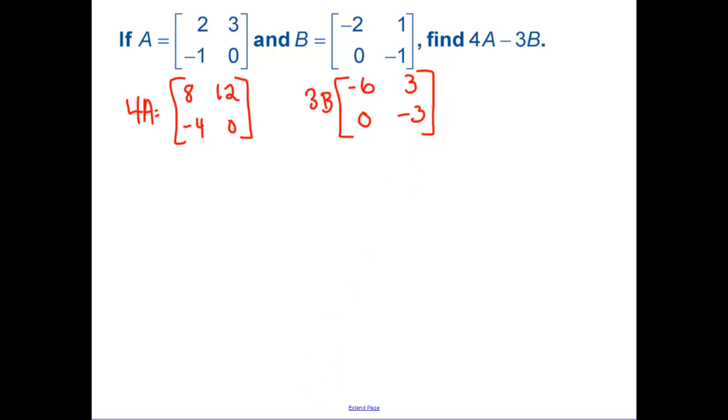Now I'm going to take it and I'm going to subtract. 8 minus a negative 6, now be careful on that one. 8 minus a negative 6 is 14. 12 minus 3 is 9. Negative 4 minus 0 is negative 4. 0 minus a negative 3 is a positive 3. So be careful when you're subtracting. What you could have done is you could have also multiplied by negative 3 on matrix B and then added if you wanted.